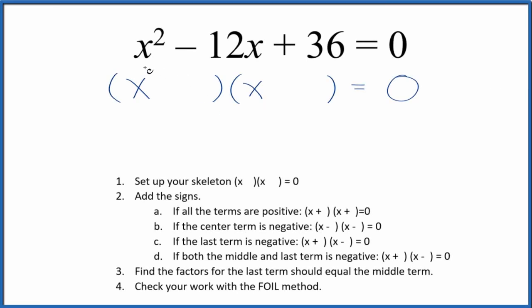All right, let's factor this equation. We have x squared minus 12x plus 36 equals zero. And the first thing we want to do is we want to get a skeleton equation. So I've already put that up here.